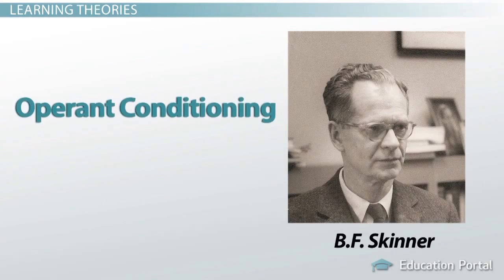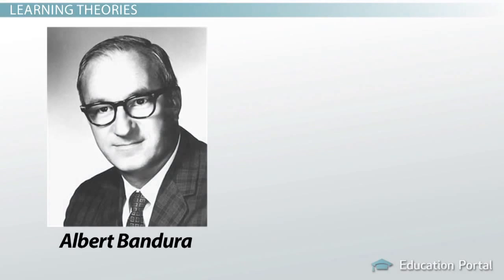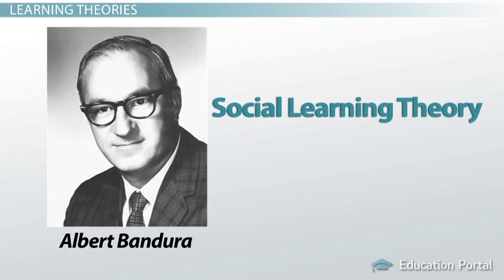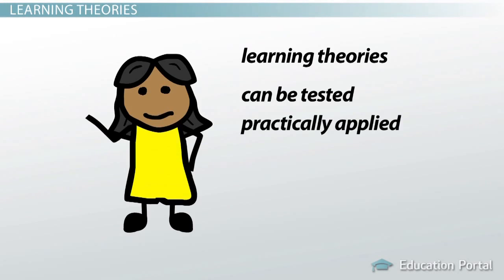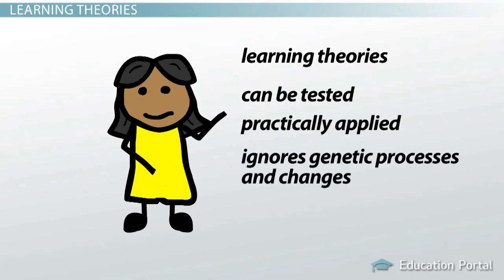Albert Bandura considered the effects of behavior modeling in his social learning theory. The major strength of behavioral learning theories is their ability to be tested and to be practically applied. The main weakness of these theories is that they generally ignore the effect of the genetic processes and changes that occur throughout the human lifespan.